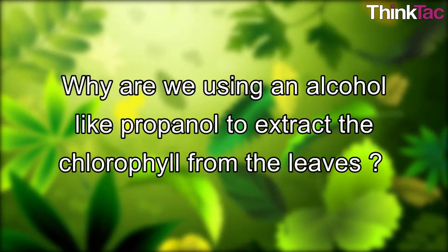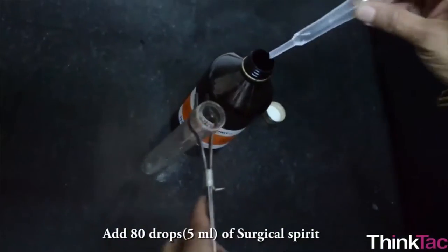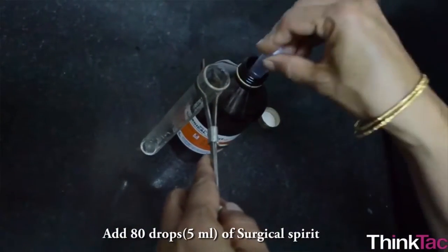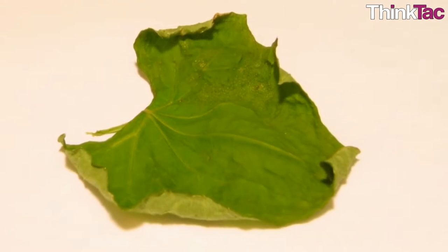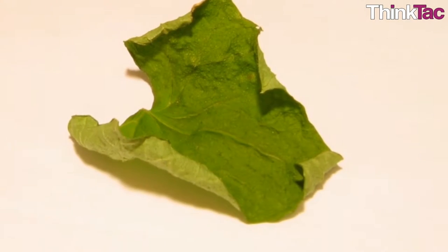You might want to know why you are using an alcohol like propanol to extract the chlorophyll from the leaves. Adding alcohol actually kills the leaf, disrupts the cell membranes and softens the cell walls. This makes it possible to extract the chlorophyll from the leaf.